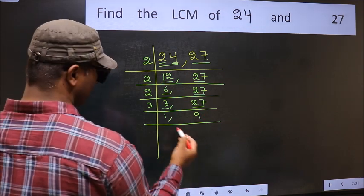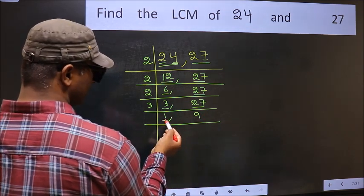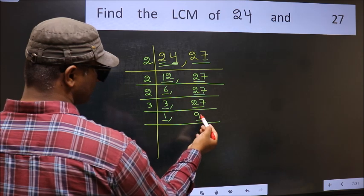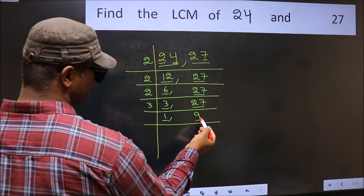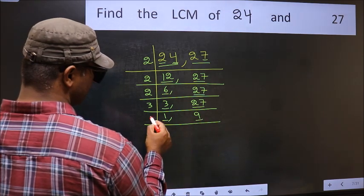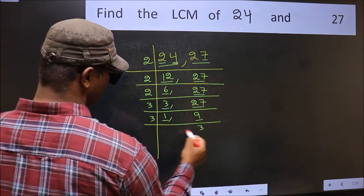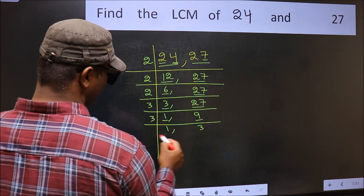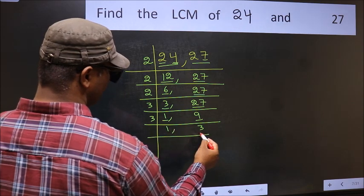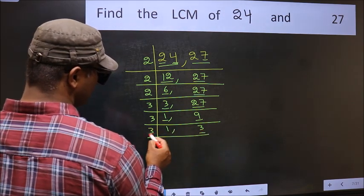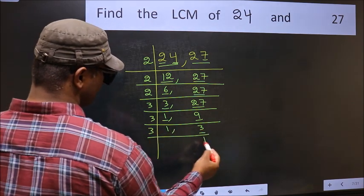Now we got 1 here, so focus on the next number, which is 9. 9 divided by 3 gives 3, since 3 times 3 is 9. Now we have 3, which is a prime number, so 3 times 1 is 3, giving us 1.